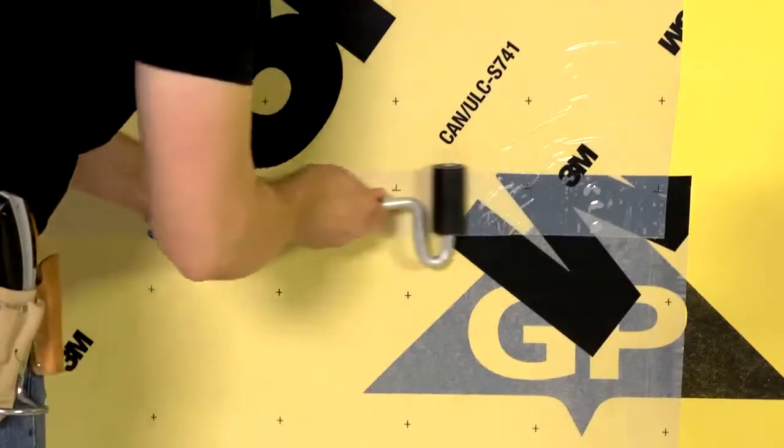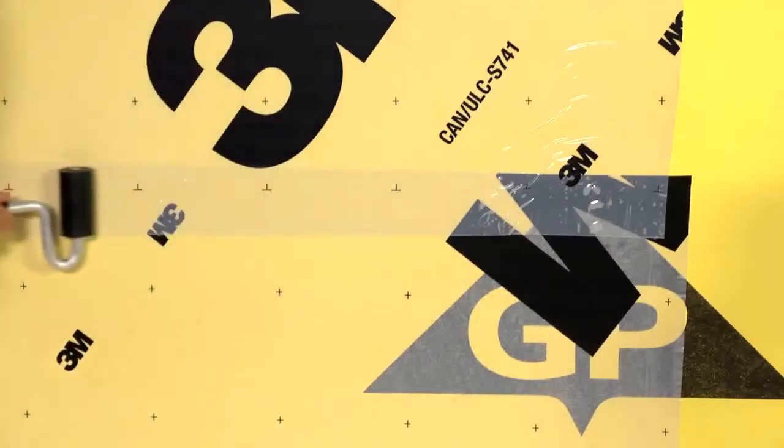For optimum barrier performance, use a J-roller to ensure a tight seal between layers.